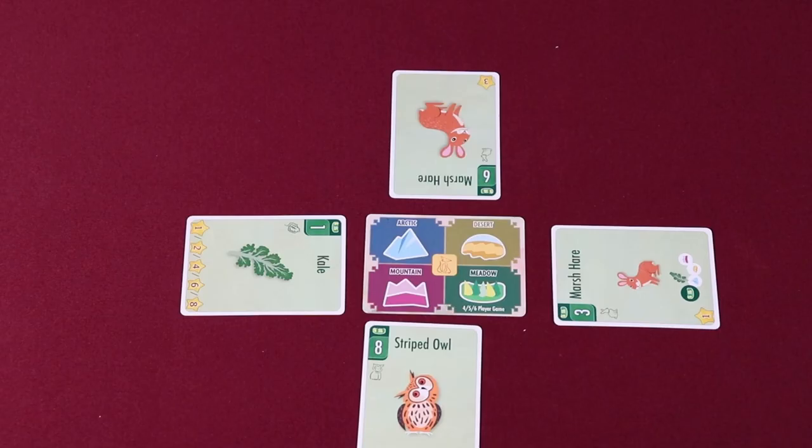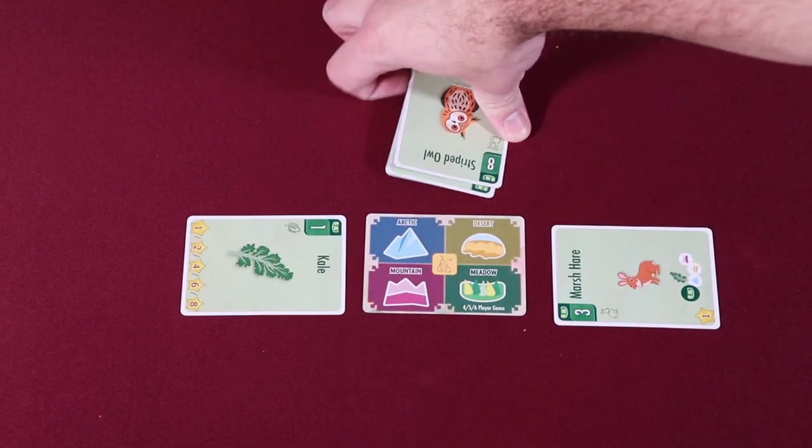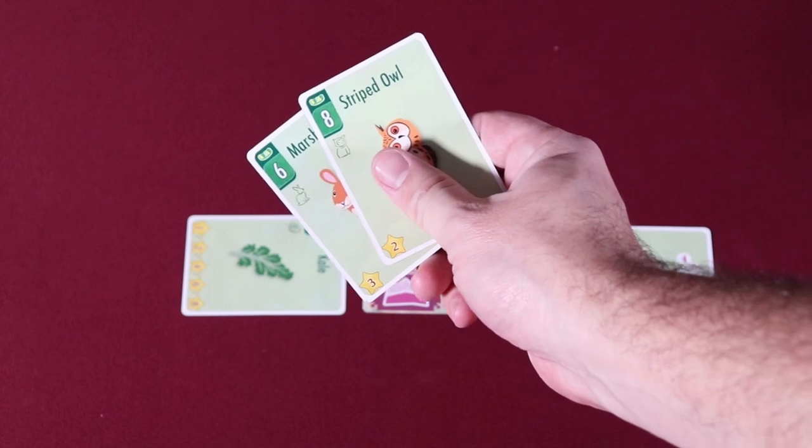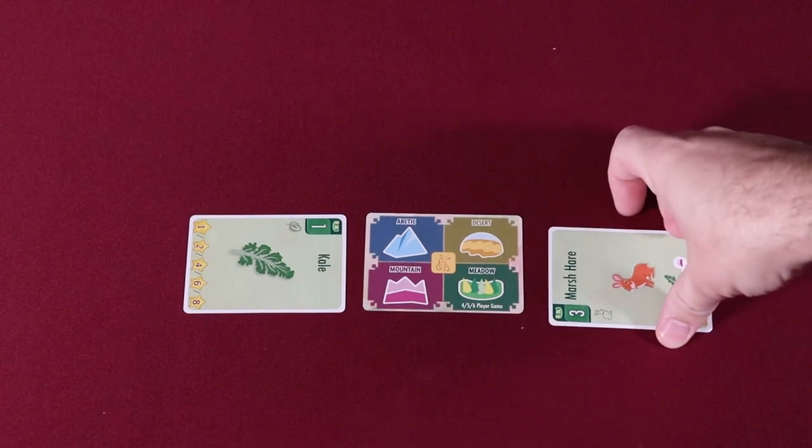After foxes, owls that are still in play and that match the lead suit are then scored. Owls may capture a face up rabbit matching the lead suit that's still in play. The owl is then discarded, and the captured rabbit is then added to the player's score pile.